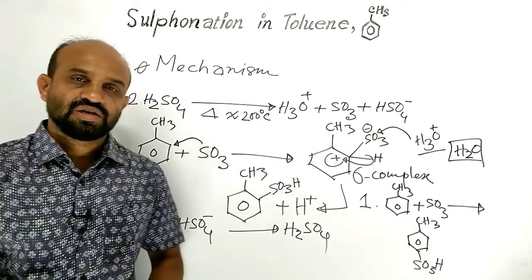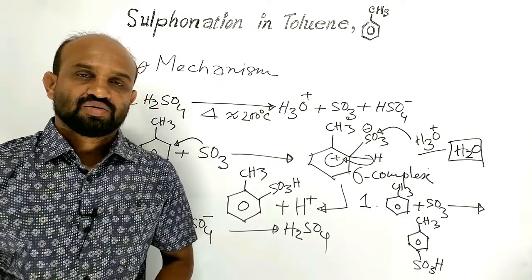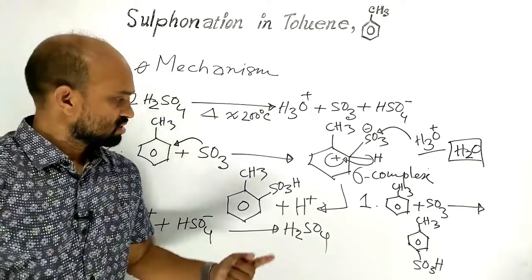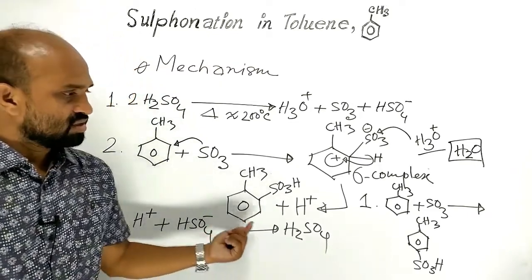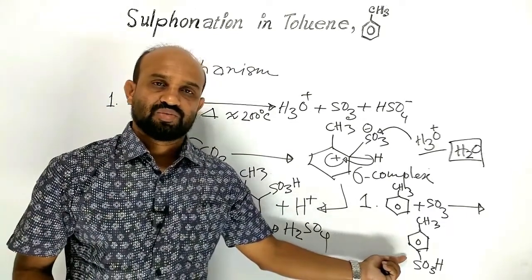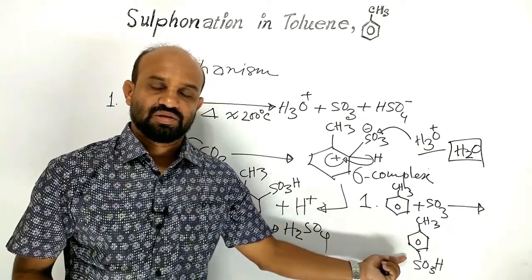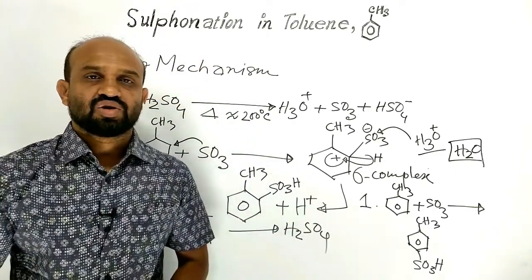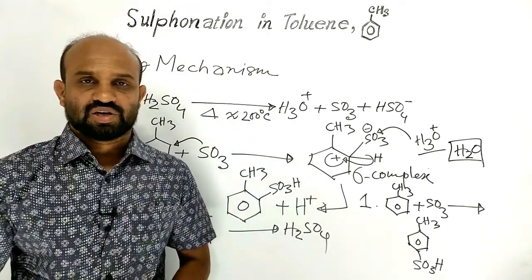Following these steps, we obtain orthotoluene sulfonic acid and paratoluene sulfonic acid, and water is obtained as a by-product.